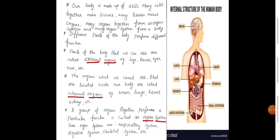The organs which we cannot see that are located inside our body are called internal organs. Examples: brain, lungs, heart, kidneys, etc.